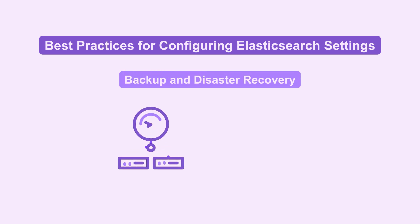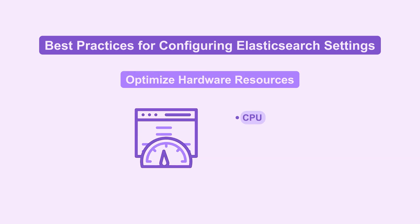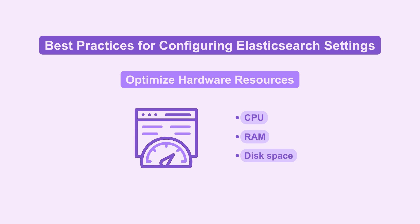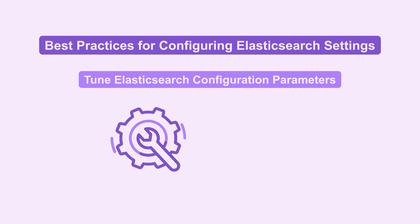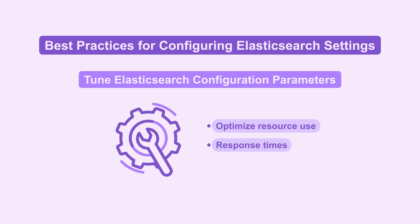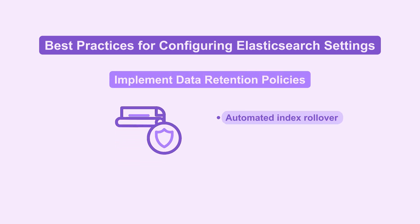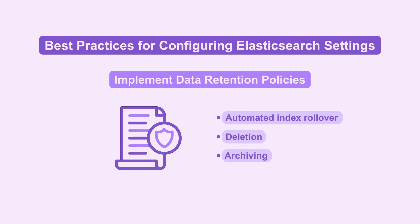Establish a robust backup strategy to prevent data loss and ensure quick recovery. Allocate adequate CPU, RAM, and disk space to Elasticsearch nodes. Fine-tune parameters like heap size and thread pools to optimize resource use and response times. Set up index lifecycle management policies for automated index rollover, deletion, or archiving.